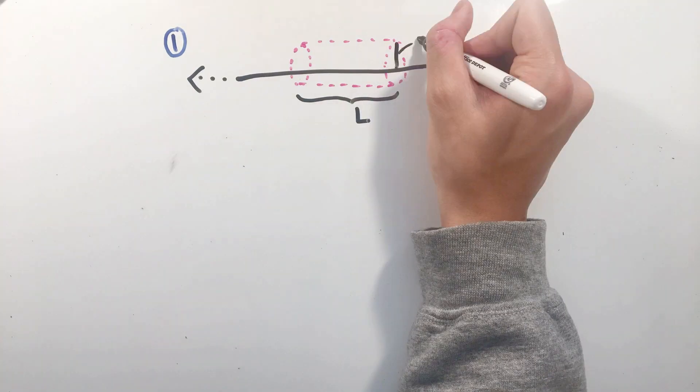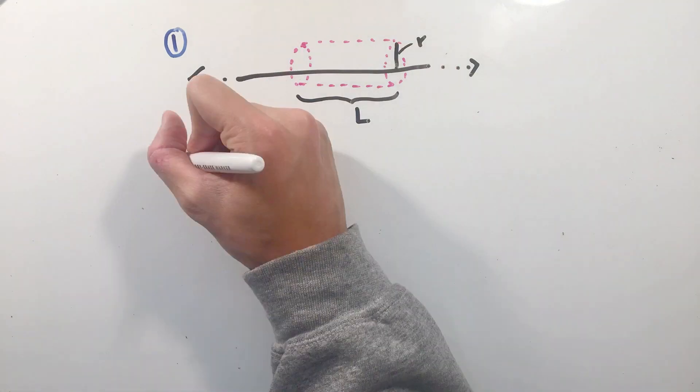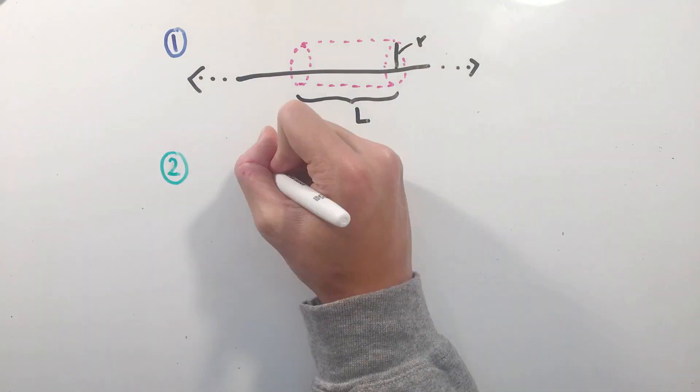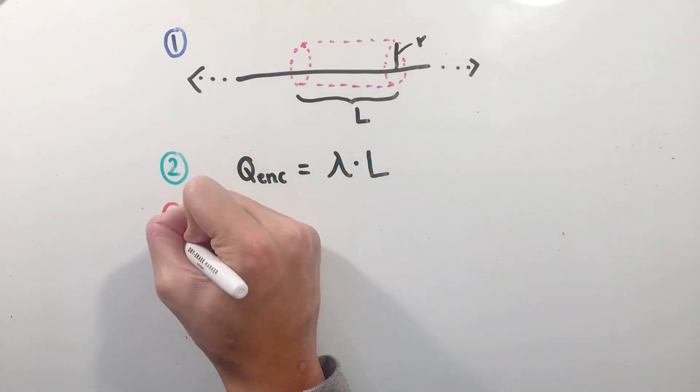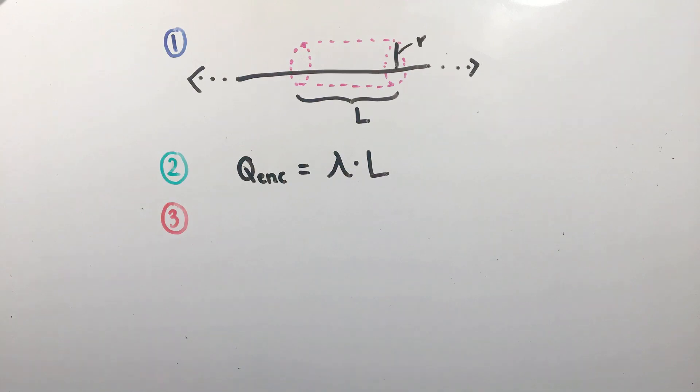For step 2, the charge enclosed by our cylinder is simply the linear charge density lambda times the length of our cylinder L. Finally, to calculate our electric field, let's look at the total flux through our closed cylinder.